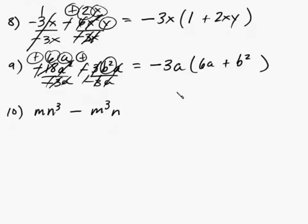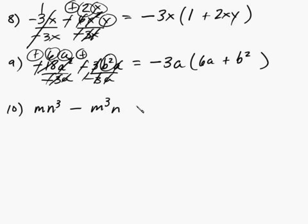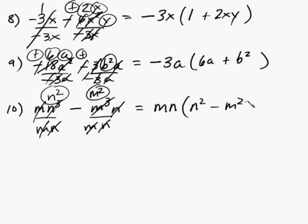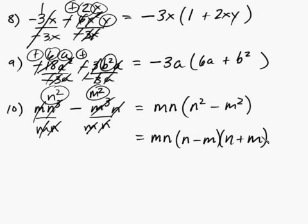The last problem: we have m cubed and m — lower degree is m. We have n cubed and n — lower degree is n. So factor out mn. Dividing by mn: m cancels and n goes 2 times; n cancels and m goes m squared times. You're left with n squared minus m squared, which is a difference of squares. So the full factorization is mn times (n minus m) times (n plus m).